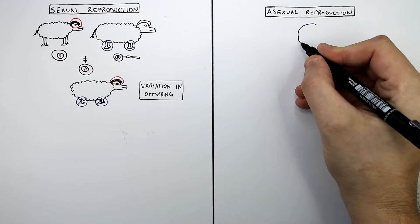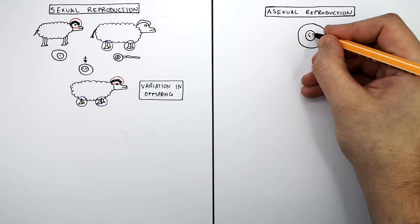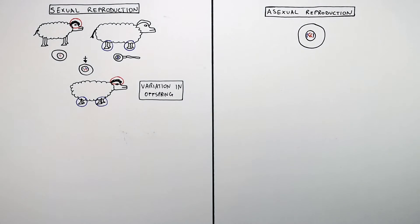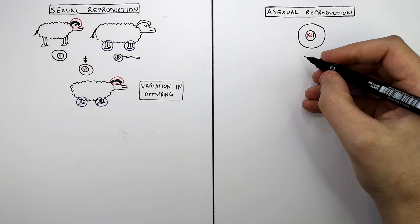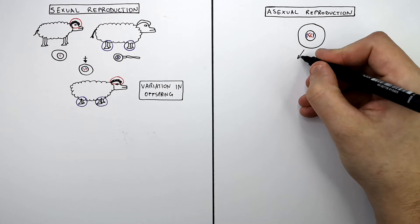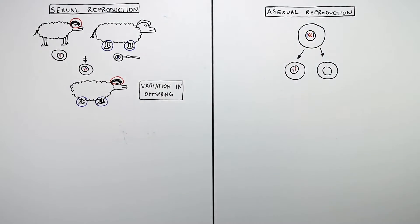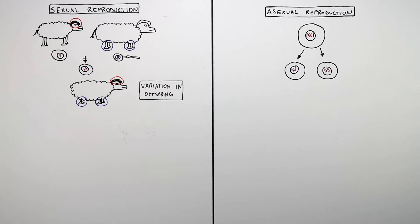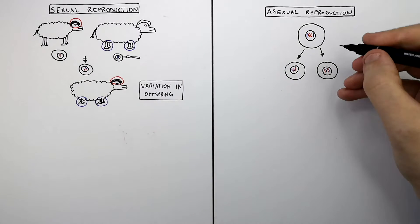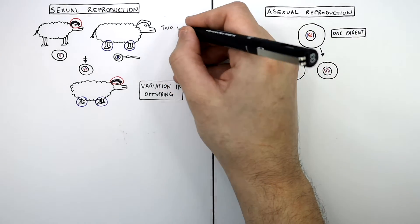This is compared to asexual reproduction. This here is a cell, and in the cell is a diploid number of chromosomes — two sets of chromosomes. Asexual reproduction is the formation of offspring without the need for sex. This cell will divide and split into two identical offspring, producing offspring which are genetically identical to the parent. Asexual reproduction only requires one parent, whereas sexual reproduction requires two parents.